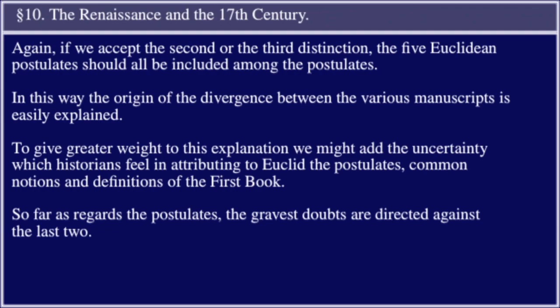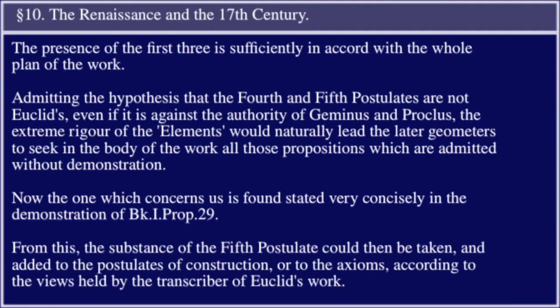To give greater weight to this explanation, we might add the uncertainty which historians feel in attributing to Euclid the postulates, common notions, and definitions of the first book. So far as regards the postulates, the gravest doubts are directed against the last two. The presence of the first three is sufficiently in accord with the whole plan of the work. Admitting the hypothesis that the fourth and fifth postulates are not Euclid's — even if it is against the authority of Geminus and Proclus — the extreme rigor of the Elements would naturally lead later geometers to seek in the body of the work